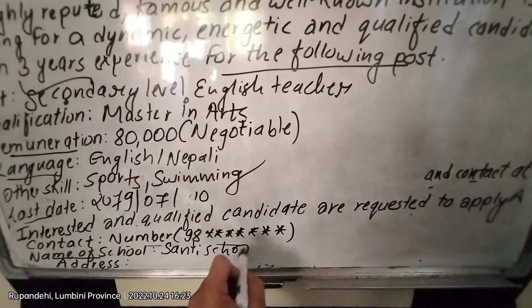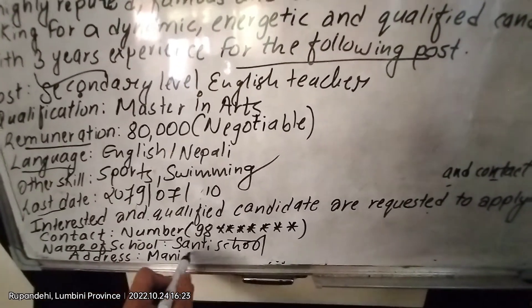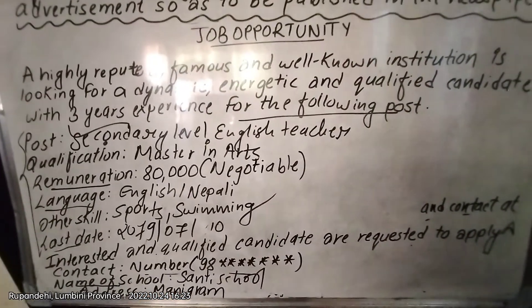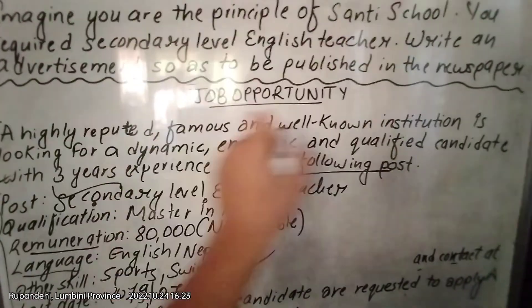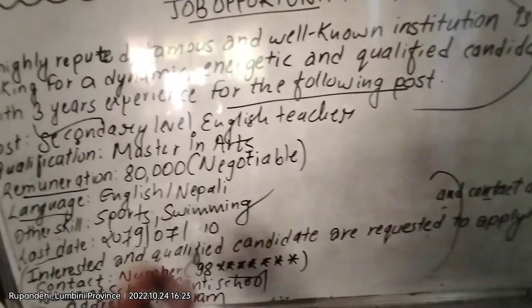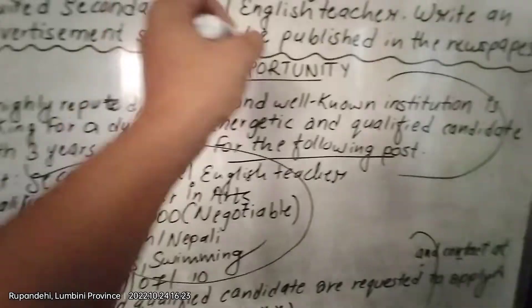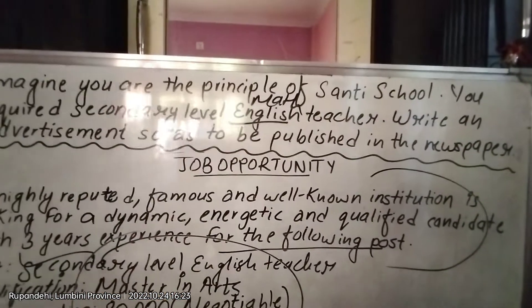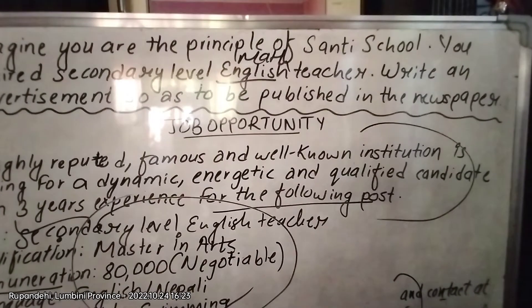You also write the name of the institution or organization, the address, and you can write a monogram. In this way you can write the job opportunity very simply and easily. Remember, this main part at the top and this last part are fixed; the middle section changes according to the question — sometimes it may ask for a math teacher, sometimes a Nepali teacher, so it depends on what type of teacher is required.